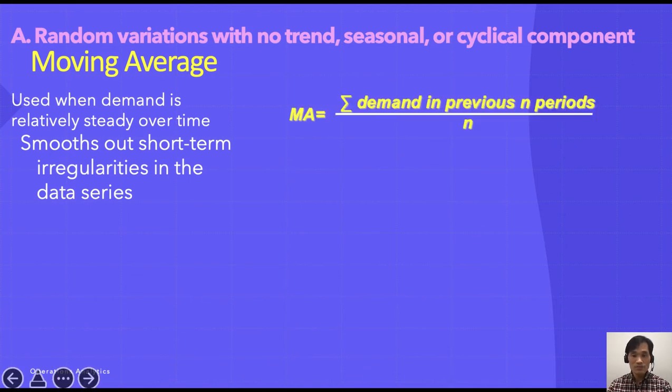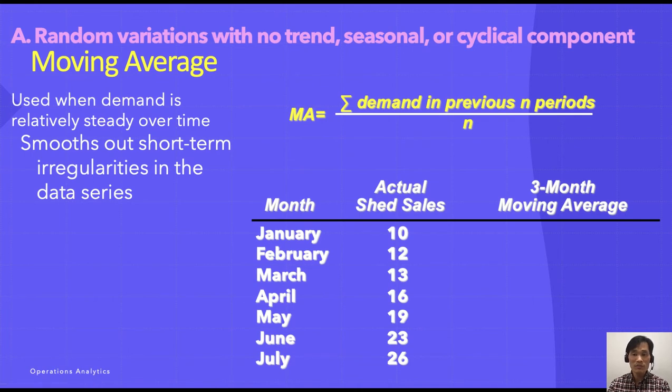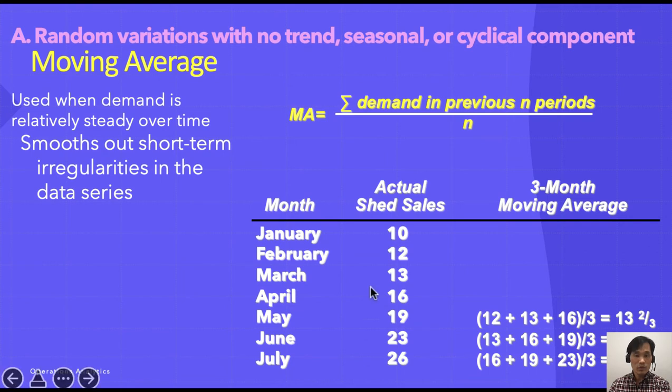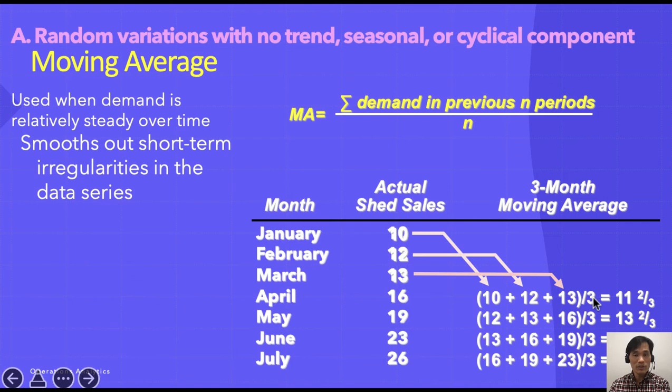Here is an example. If you are using three-month moving average, you add up the three months past sales data and divide it by the number of months, in this case three. You can start working on the forecasting from April because it is the earliest time you can have three past months data available. We have three months data, divide by three, that gives you the average of three month past data, and that's your moving average.